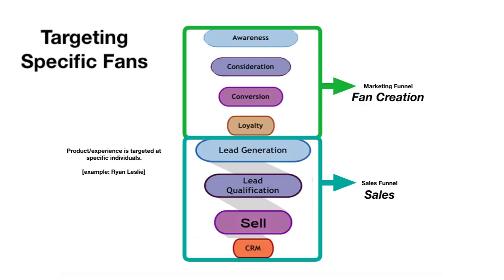If you think about Ryan Leslie — check out the Ryan Leslie video I did — he used SuperPhone, his app, to filter throughout his fan base and see which levels of fans he has. Once a year he has a private party where he targets specific fans that spent a certain amount of money and have certain behaviors. You can tell who would be more likely to buy and who's worth targeting based on specific behaviors — just like if I had a concert in LA, my LA fans would be more likely to buy than my New York fans.